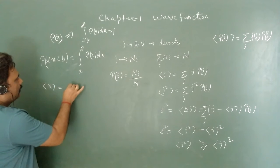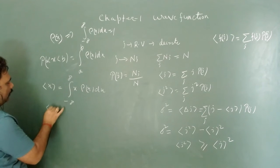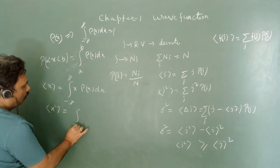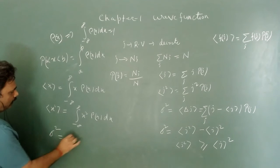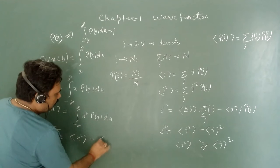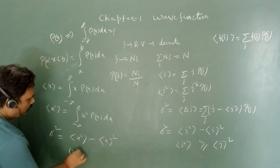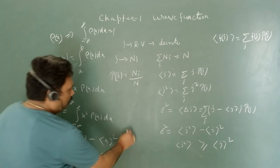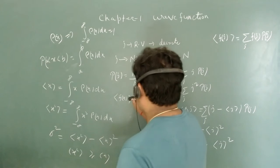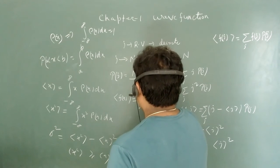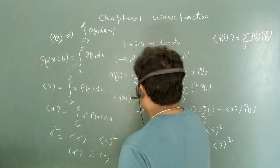The expectation value of X — where X is a continuous random variable — is ⟨X⟩ = ∫ x·ρ(x) dx over all values. Similarly, ⟨X²⟩ = ∫ from −∞ to +∞ x²·ρ(x) dx. The variance σ² = ⟨X²⟩ − ⟨X⟩². The expectation value of any function F(X) is ∫ from −∞ to +∞ F(x)·ρ(x) dx.